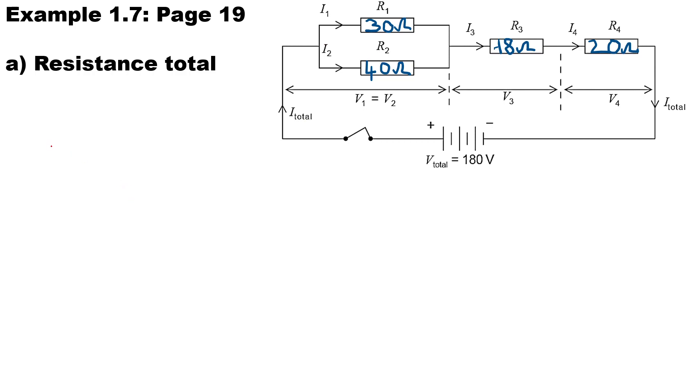Welcome to this video for resistors in series and parallel. We're doing example 1.7 on page 19. To calculate the resistance total of this circuit, calculate the resistance total. It will be the resistance of the parallel branch plus the resistance in series, which is R3 and R4.